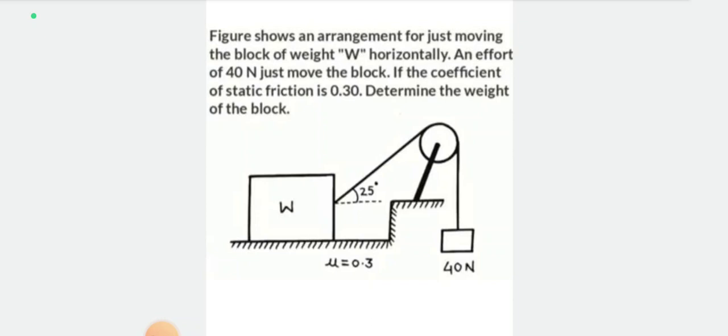There is a horizontal surface and there is a block on it. The block is on the horizontal surface and the coefficient of friction is 0.3. We need to find the weight of the block.